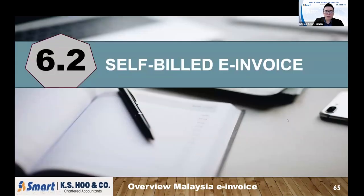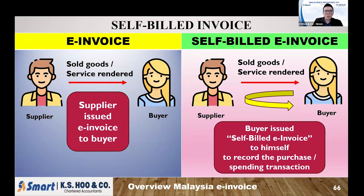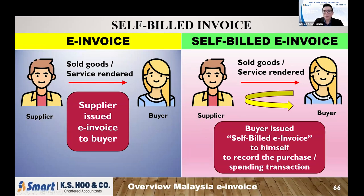The next topic is the self-billed e-invoice. Self-billed means you issue an e-invoice to yourself. Why would you need to? In some transactions, your supplier is unable to issue an e-invoice to you. So if you want to have supporting documentation to justify your expenses, you need to do a self-bill. Normally, the supplier issues an e-invoice to the buyer. But in some instances, if the supplier is unable to issue an e-invoice, the buyer who acquires the goods or services needs to issue a self-billed invoice to themselves to justify their spending — the purchase transaction.